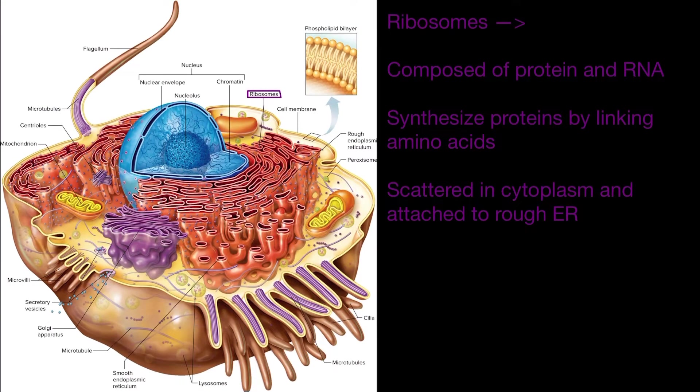Now ribosomes, which you can see right here, are these small structures. In this picture they are all purple. They are composed of protein and RNA and their job is to synthesize or put together proteins by linking together amino acids. They are scattered across the cytoplasm and some of them are also going to be attached to the rough ER, which we're going to talk about in a minute.